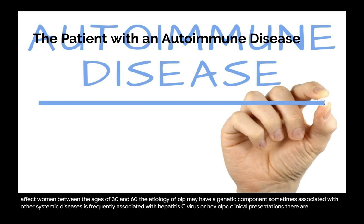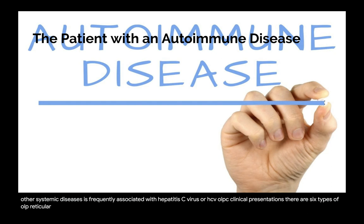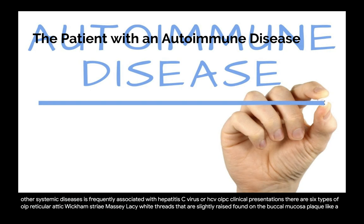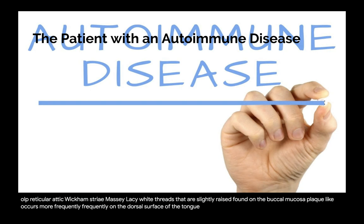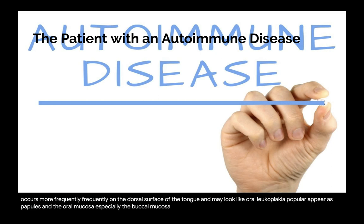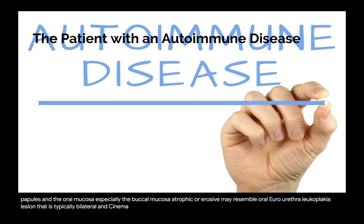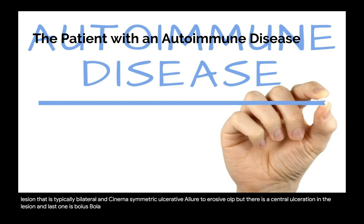There are six types of OLP clinical presentations: reticular — characterized by Wickham striae, lacy white threads slightly raised on the buccal mucosa; plaque-like — occurring more frequently on the dorsal tongue; papular — appearing as papules on the oral mucosa; atrophic or erosive — typically bilateral and symmetric; ulcerative — similar to erosive OLP but with central ulceration; and bullous — involving separation of the oral epithelium from underlying connective tissue.